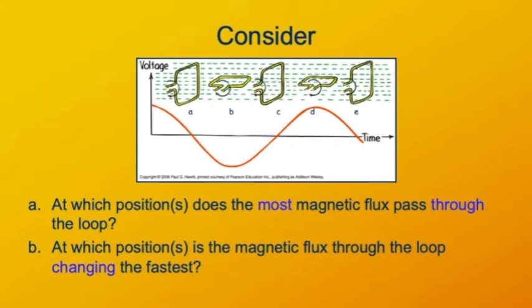Where and when is the magnetic flux through the loop the greatest? And where and when is the flux through the loop changing the fastest? Please pause the video and consider these two questions.